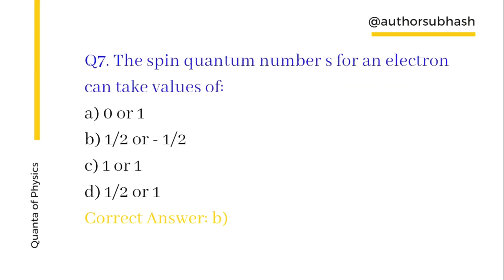Question number seven: The spin quantum number S for an electron can take a value of plus or minus one-half.